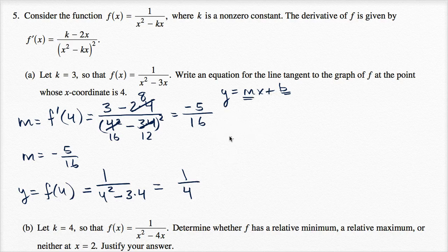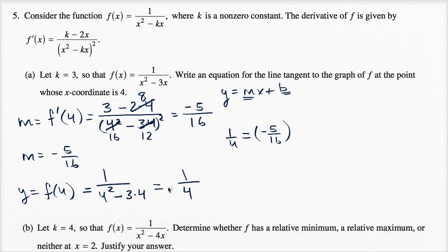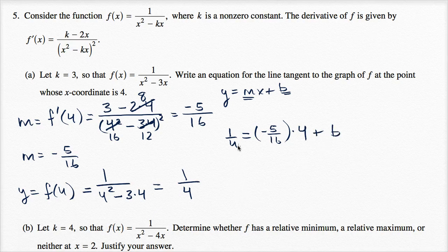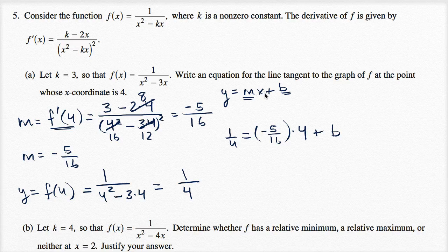We can use that information to solve for b. When y is one fourth and x is equal to four, we plug into y equals mx plus b: one fourth equals negative five sixteenths times four plus b. Four times negative five sixteenths is negative five over four, so we have one fourth equals negative five fourths plus b.